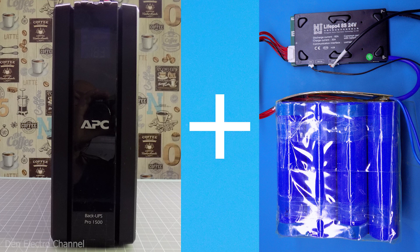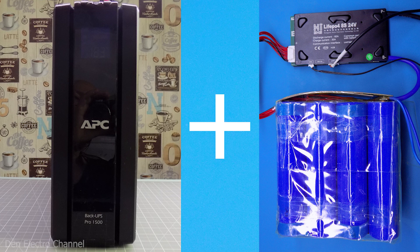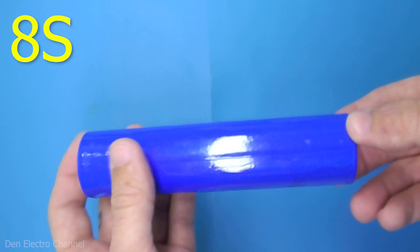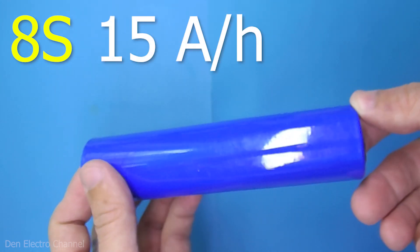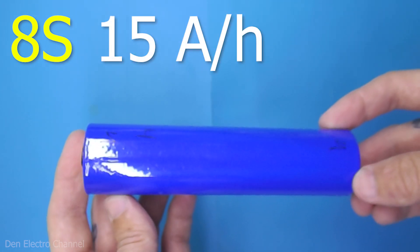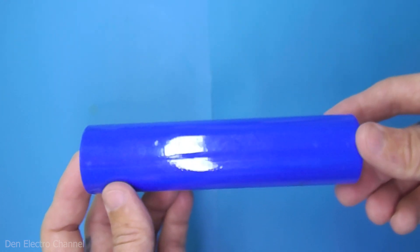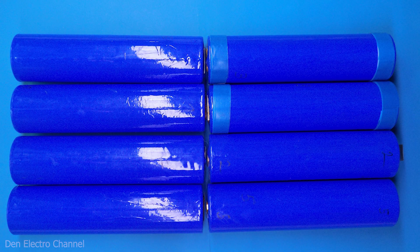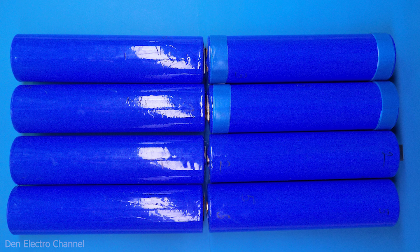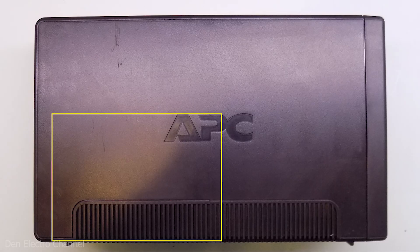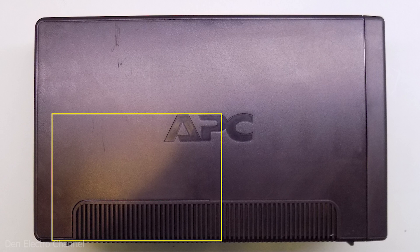I'll start with batteries. 8 lithium iron phosphate batteries will be used here, each with a capacity of 15 amp hours. The nominal voltage of each such battery is 3.2 volts. Therefore, to get 24 volts they must be connected in series. In UPS, the battery compartment is located here. 2 batteries were installed vertically.